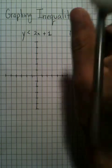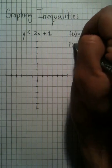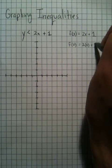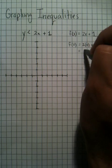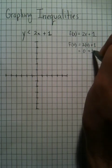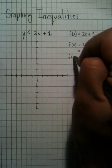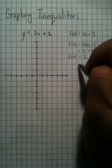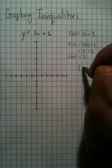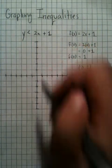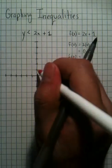Pick an input, any input you want. Say, I want my input to be 0. I'd be like, fine. 2 times 0 plus 1 is 0 plus 1, which is just 1. So when you use the input of 0, you get 1 as an output. That's just a fancy way of saying the coordinate 0 comma 1. 0 comma 1 is right here.